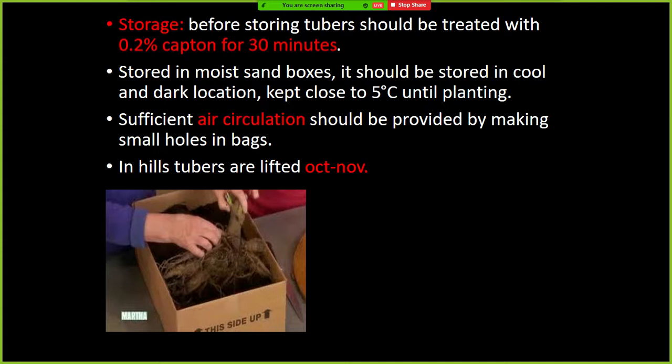Another key point is Dahlia pinnata — this species has nematicidal property. Hence it is used as an intercrop or trap crop in cabbage or cauliflower nurseries. Remember: Dahlia pinnata has nematicidal property and is used in cabbage and cauliflower nurseries as a trap crop.